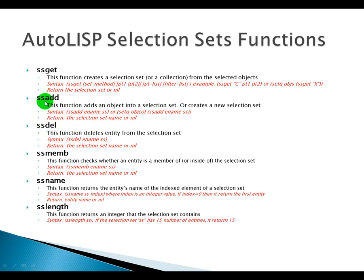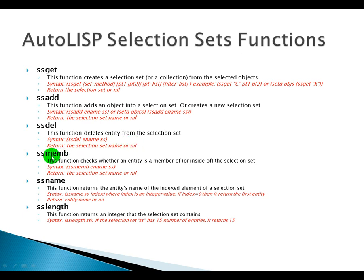SSDel is the opposite of SSAdd — it deletes an entity from the selection set. For example, if 'ename' is one of the objects in selection set 'ss', once we issue the command (ssdel ename ss), it will remove that entity from the collection. The return value is the selection set name, or nil.